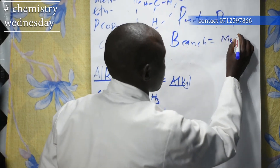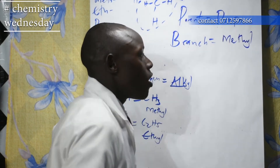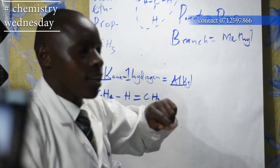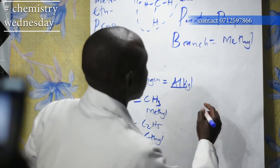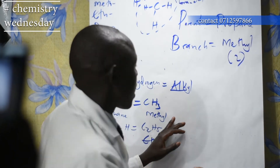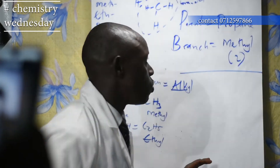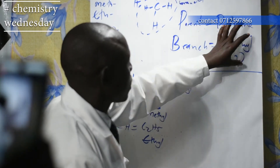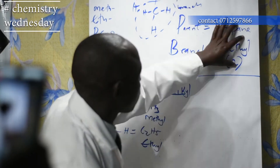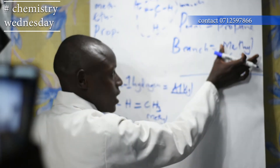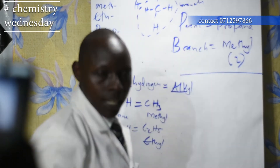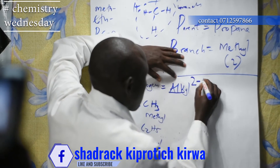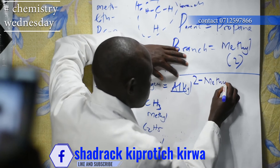So the branch is CH3 — it is a methyl. The branch is at carbon number 2. To give it the full name, you start with the branch name and position, then the parent name goes last. So the name of this compound is called 2-methylpropane.